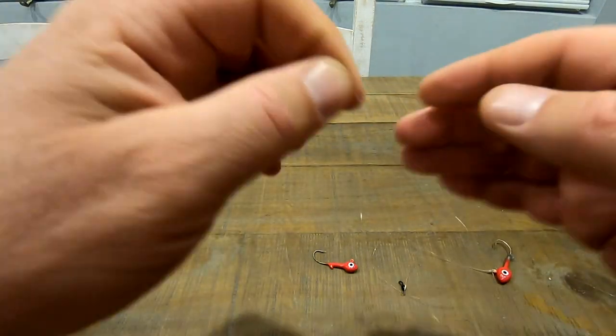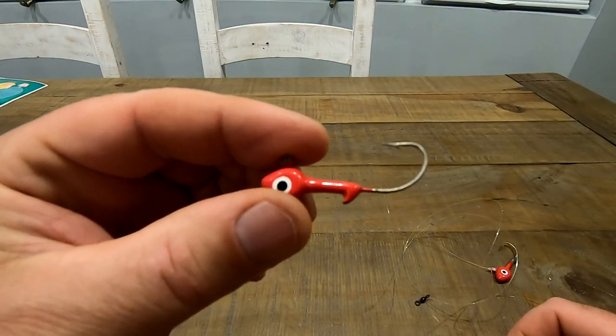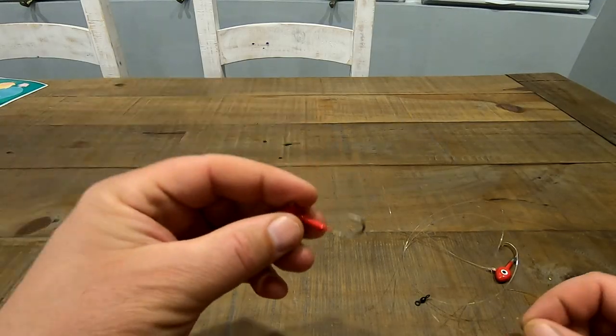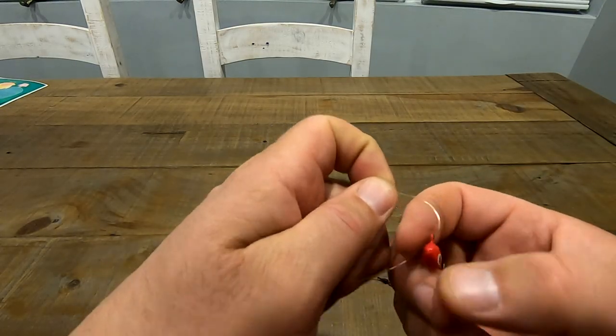And just let that drop down. Now on the other end I have another jig, same one but a little smaller, lighter version of that. You can see the same style, tie it on the other end. Now you can see there's all one piece of monofilament I'm using.